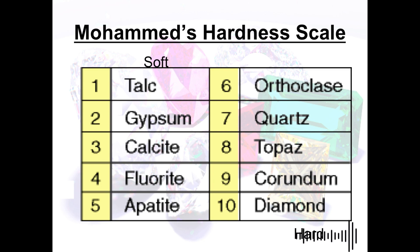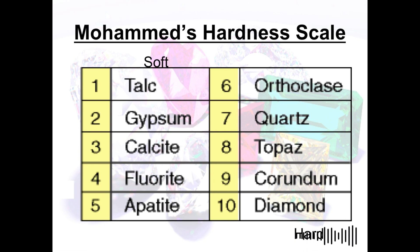Next is apatite, rated 5 on the Mohs scale. Apatite is a phosphate mineral commonly used commercially for fertilizers, acids, and chemicals.